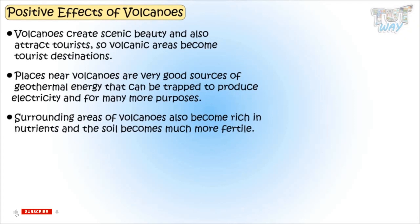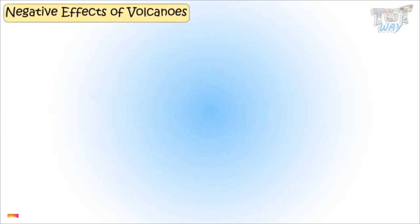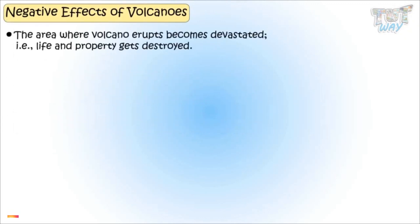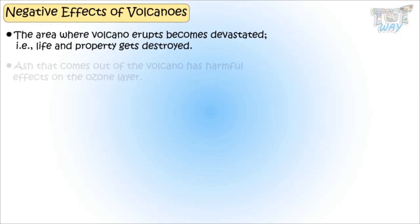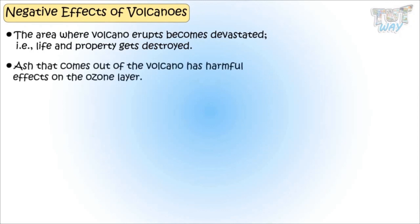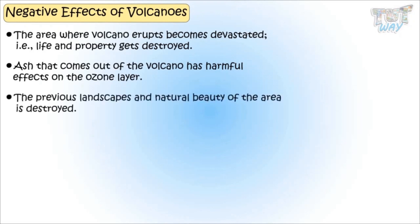Now let's learn some negative effects of volcanoes. The area where volcanoes erupt becomes devastated — it destroys life and property. Ash that comes out of volcanoes has a very bad effect on the ozone layer. The previous landscape and natural beauty of the place is also destroyed.